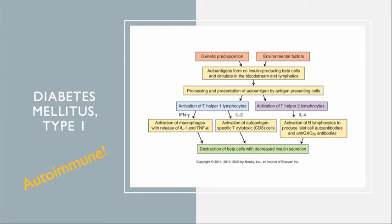Type 1 diabetes: think autoimmune cause. The body destroys the beta cells. This requires both genetic predisposition and an environmental component — it's not a purely inherited genetic disease but a situational disease occurring in the right milieu. Autoantigens form on insulin-producing beta cells, circulate, and get processed by antigen-presenting cells, activating T cells. The T cells produce interferon gamma, interleukin-2, and interleukin-4, firing up the immune response that results in destruction of beta cells.